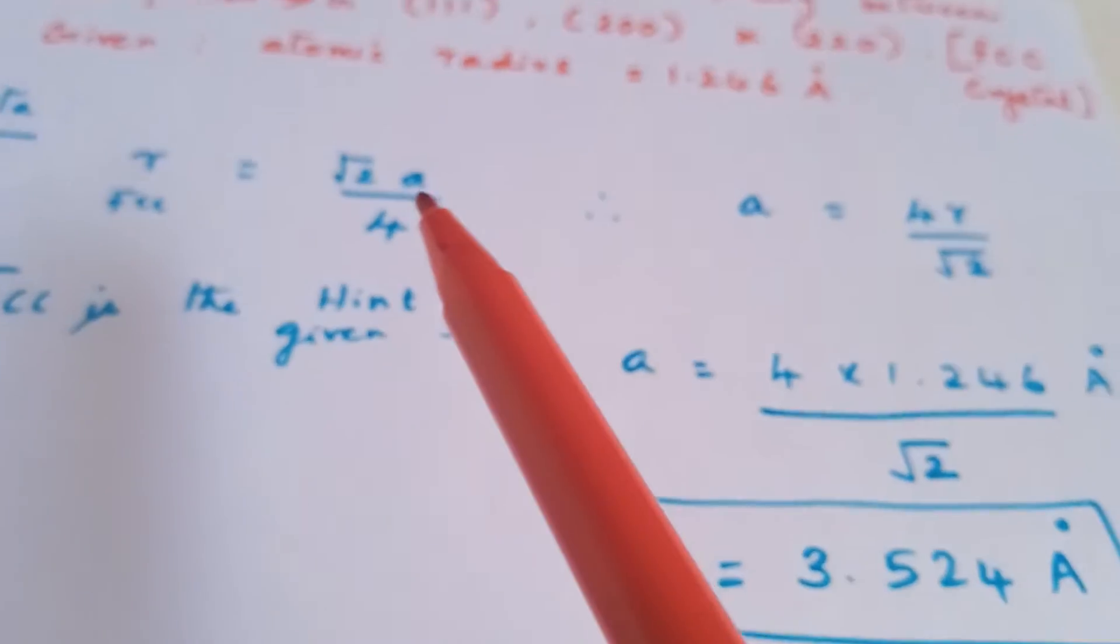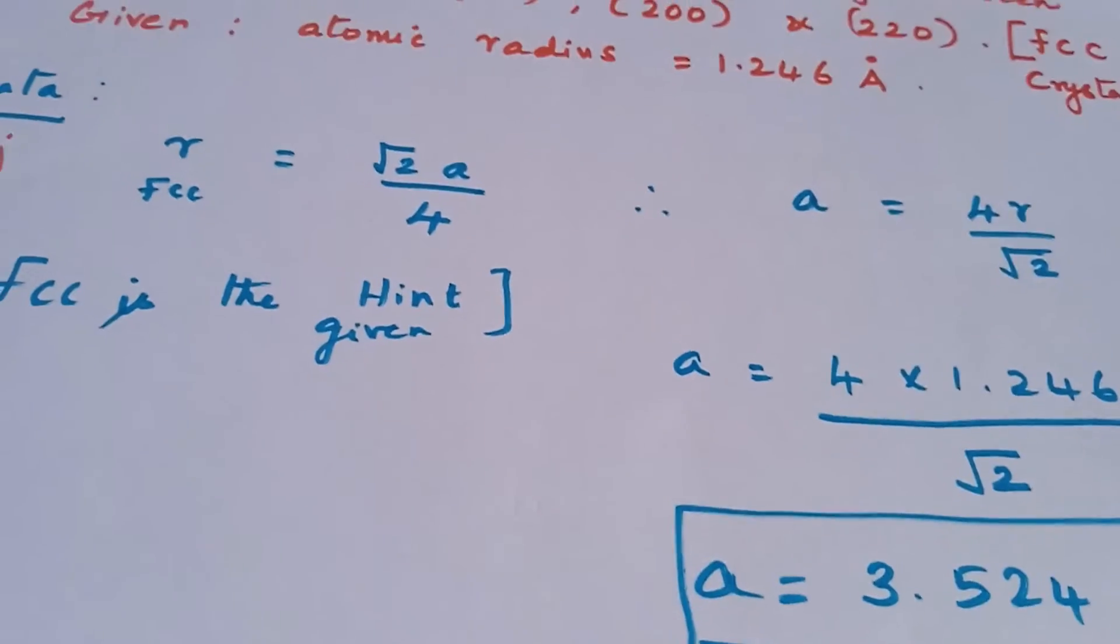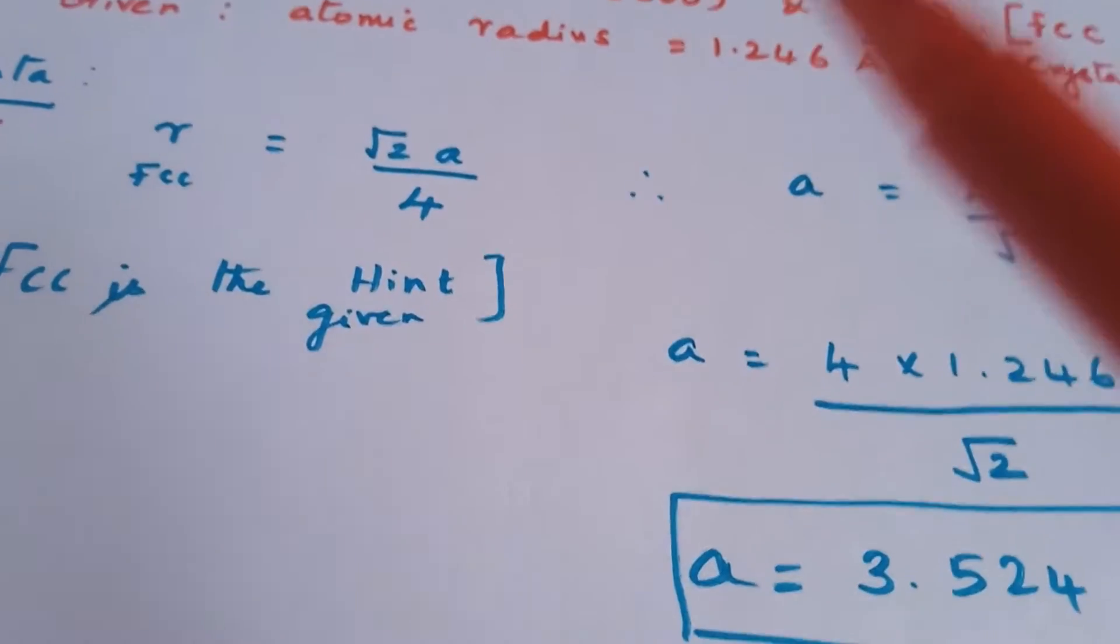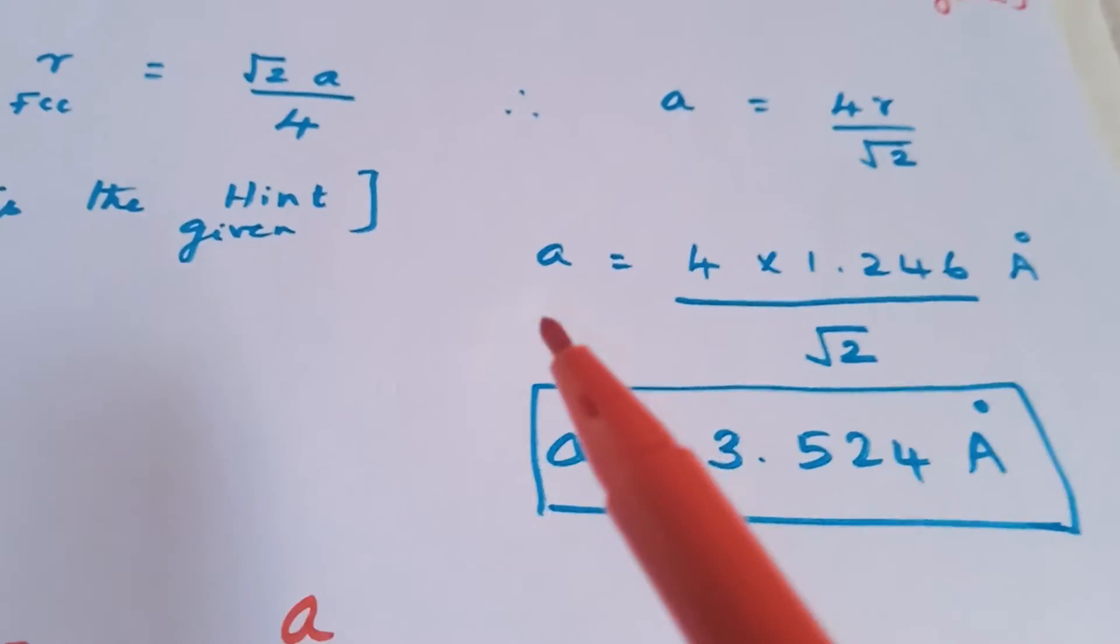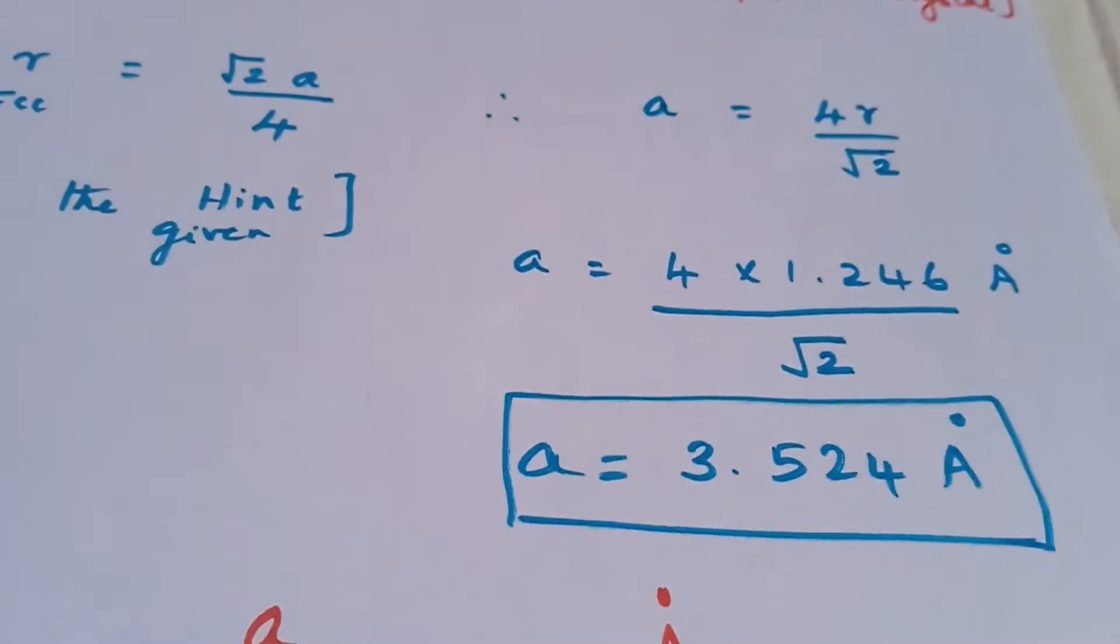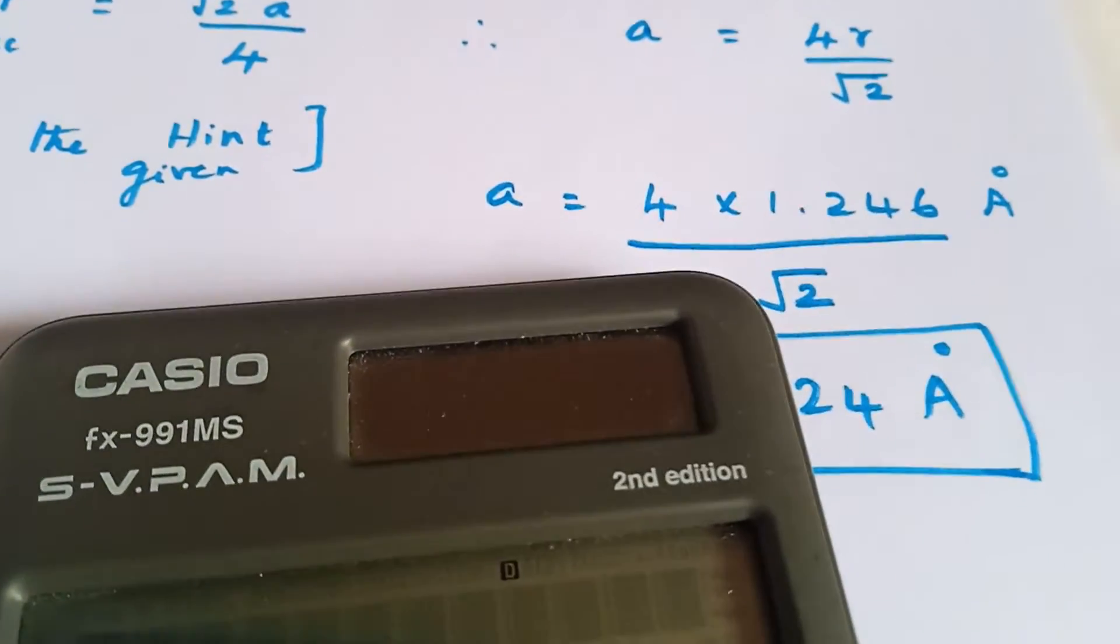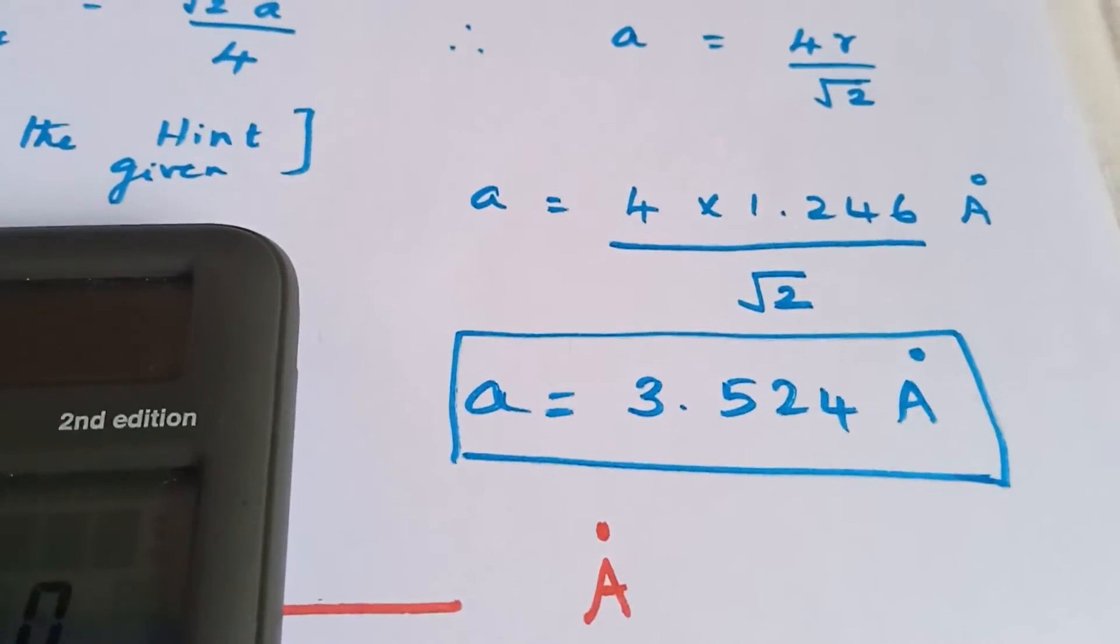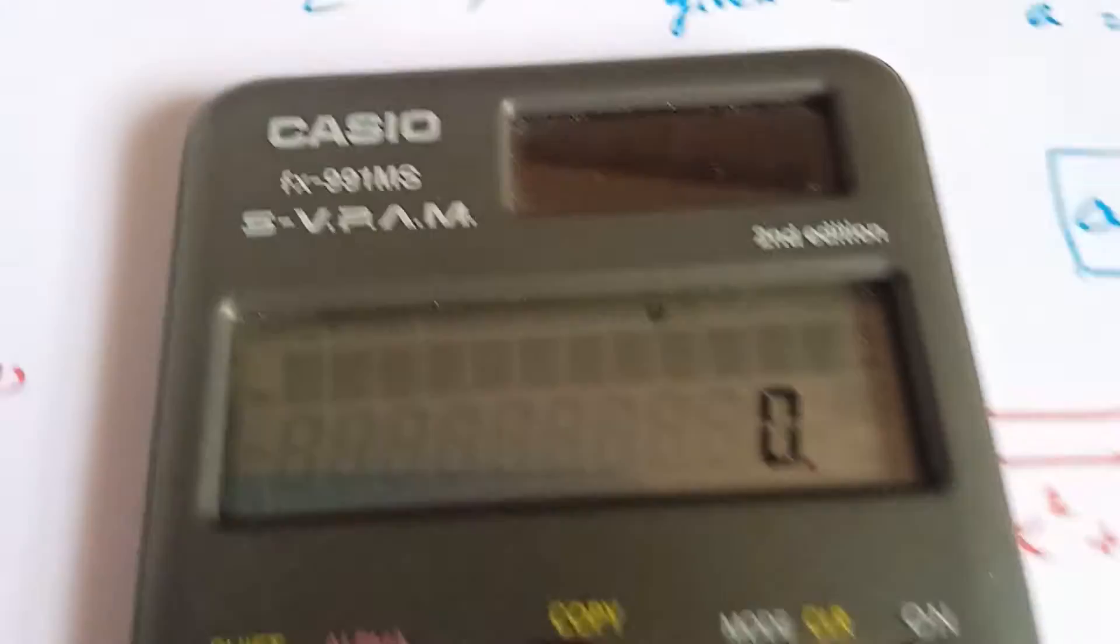So, a value is taken as 4r divided by root 2. In the place of r, the value is substituted and a value is calculated.